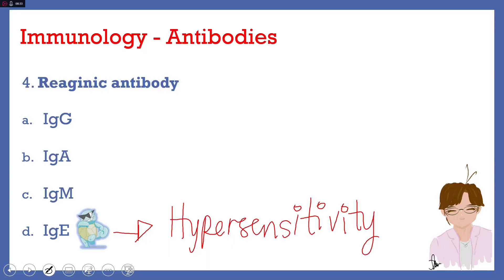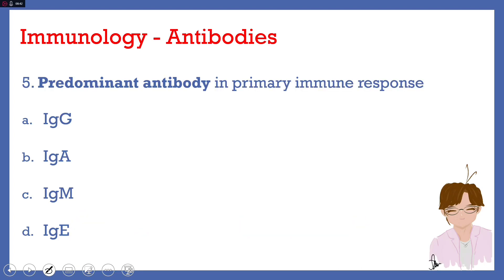Alright, so let's move on to the next question. By the way, one more time number 4 answer is letter D, IgE, reagenic antibody. The final number for this video is number 5. And it asks us about the predominant antibody in primary immune response. Letter A, IgG, letter B, IgA, letter C, IgM, or letter D, IgE. Now, we have already explained that. So I guess we all know the answer is IgM, letter C, IgM.